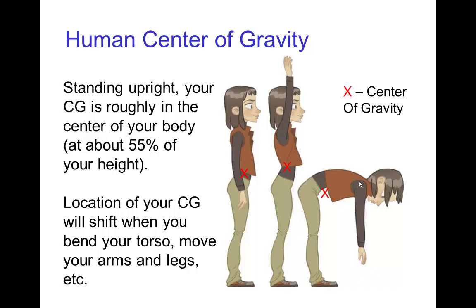You can bend your torso, you can move your arms and legs, and when you change your shape, the location of your center of gravity shifts. So when you raise your arms, your center of gravity rises higher in your torso. If you bend over, it could actually be located outside of your body as you see in this third illustration.